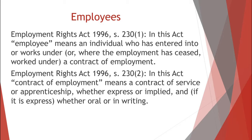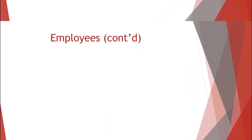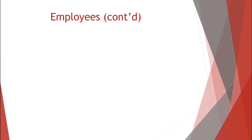If the contract is express, it may be oral or in writing. A distinction has to be drawn between employees and independent contractors. Although an employer will be vicariously liable for the acts or omissions of an employee, it will not be liable for the acts or omissions of an independent contractor.